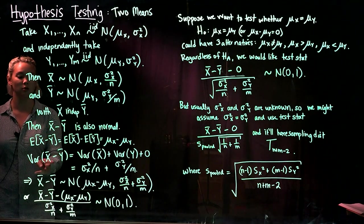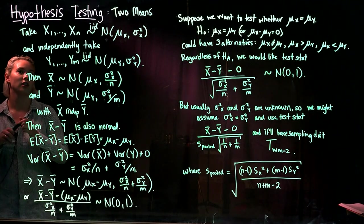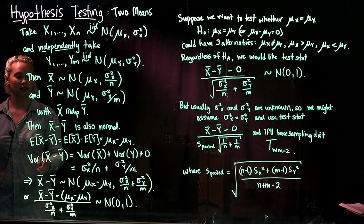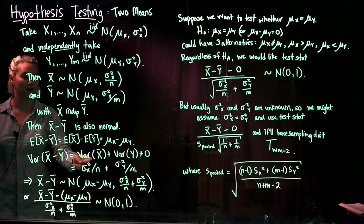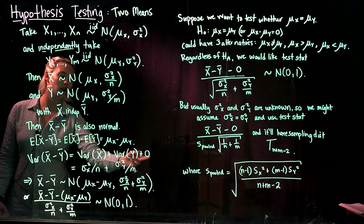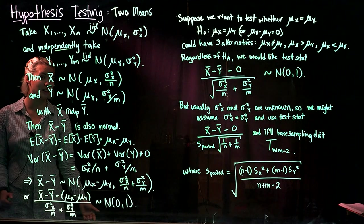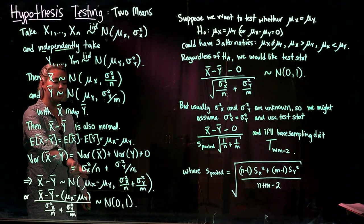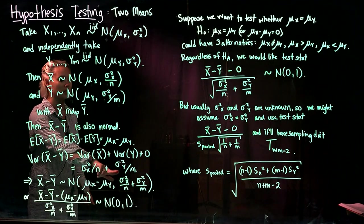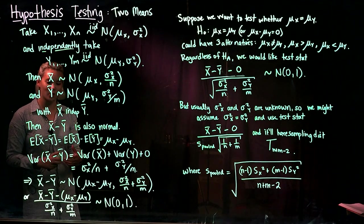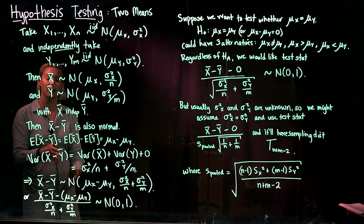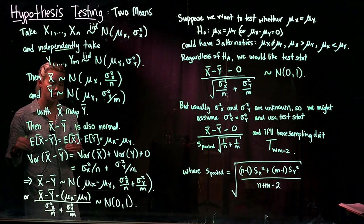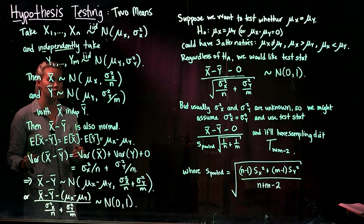Now for the variance of x̄ minus ȳ — this is where independence is useful. Because we took the two samples independently, the variance of x̄ minus ȳ is just the variance of x̄ plus the variance of ȳ, with no covariance term. So the variance is sigma squared x divided by n plus sigma squared y divided by m. Putting this together, x̄ minus ȳ is normally distributed with mean mu x minus mu y and variance sigma squared x over n plus sigma squared y over m.